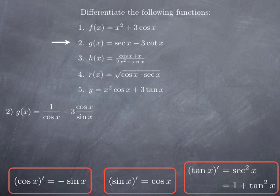Moving on to the second function, defined by secant x minus 3 cot x, there are two ways to differentiate that. If you remember the formulas for the derivative of secant and of cot, you can just apply those and obtain almost immediately the derivative. But I really only expect you to remember the derivative of cosine and sine and to be able to recover the formulas for the derivative of the other four trig functions quickly from those.